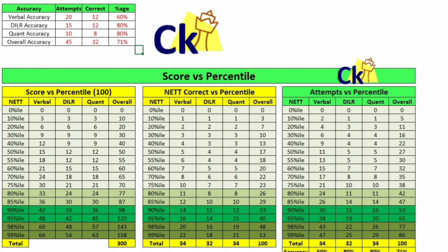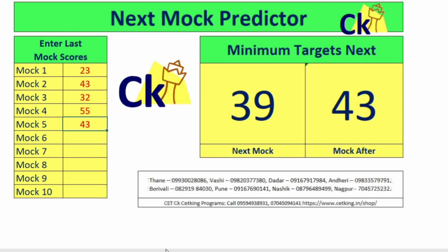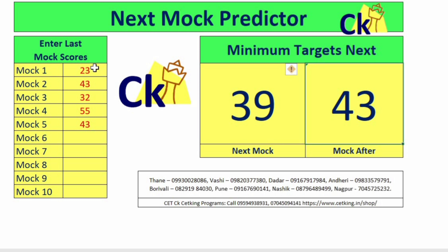I made part one of the video earlier where this was telling me the minimum score required. Now, for example, the mock score goes up and down — for example 23, 43, 32, 55, 43. This means the weighted average of these five scores tells me my next two mocks should be more than 39 and 43.